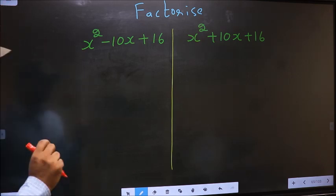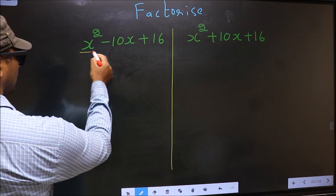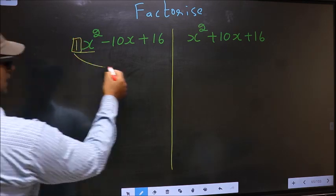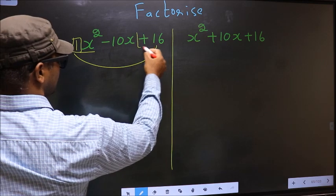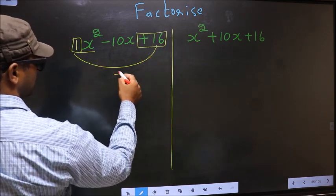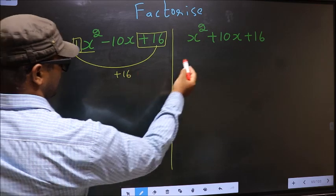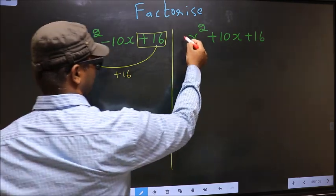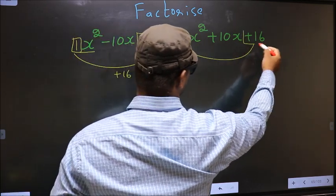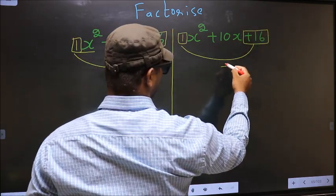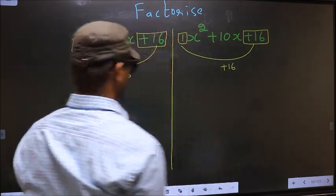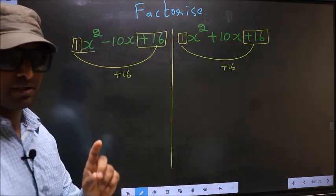In the first step, the coefficient of x squared — which is 1 — should be multiplied to the constant, that is plus 16. So, 1 into plus 16 is plus 16. Over here also, the coefficient of x squared, 1, multiplied to the constant plus 16, you get plus 16. This is your step 1.